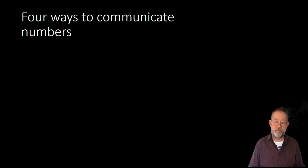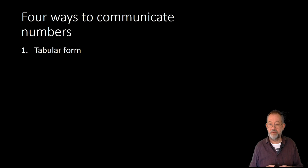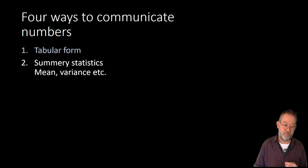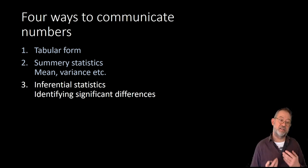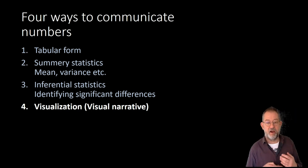Talking about communicating numbers, there's a classic form. There is a tabular form. There's variants of it. You can color the numbers in the cells red if they're negative, green if they're positive, all that type of things. But basically the tabular form. We can also communicate numbers using some of statistics. So calculating the mean, variance, etc. We can use inferential statistics. So statistics that test hypothesis. If we ever see things like significant differences and so on, then we're talking about inferential statistics. And finally, we can use visualizations or visual narratives as our way of communicating.